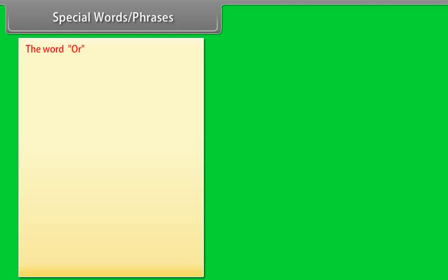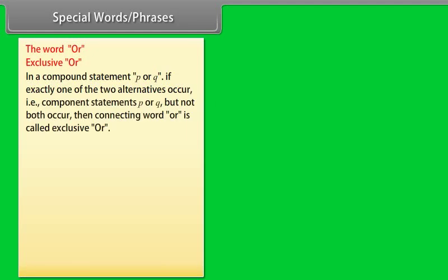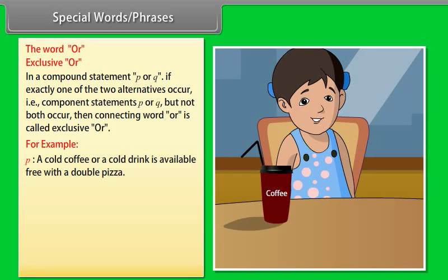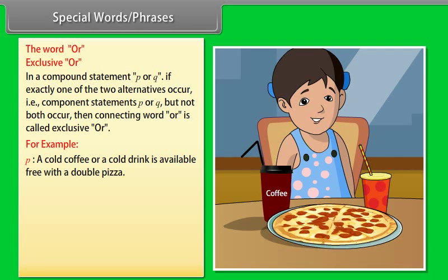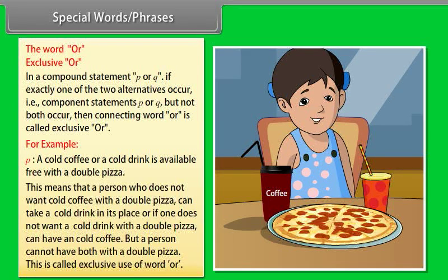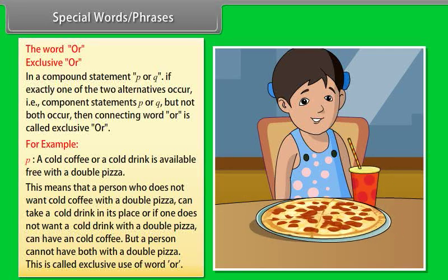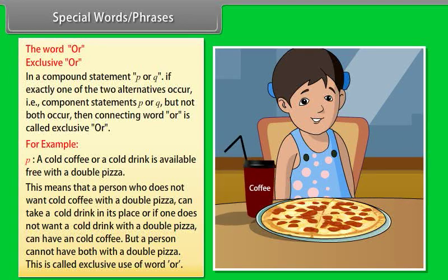The word OR — Exclusive OR: In a compound statement 'P or Q', if exactly one of the two alternatives occurs — that is, component statement P or Q but not both — then the connecting word OR is called exclusive OR. For example, P: 'A cold coffee or a cold drink is available free with a double pizza' means a person can have one or the other but not both with a double pizza. This is called the exclusive use of the word OR.